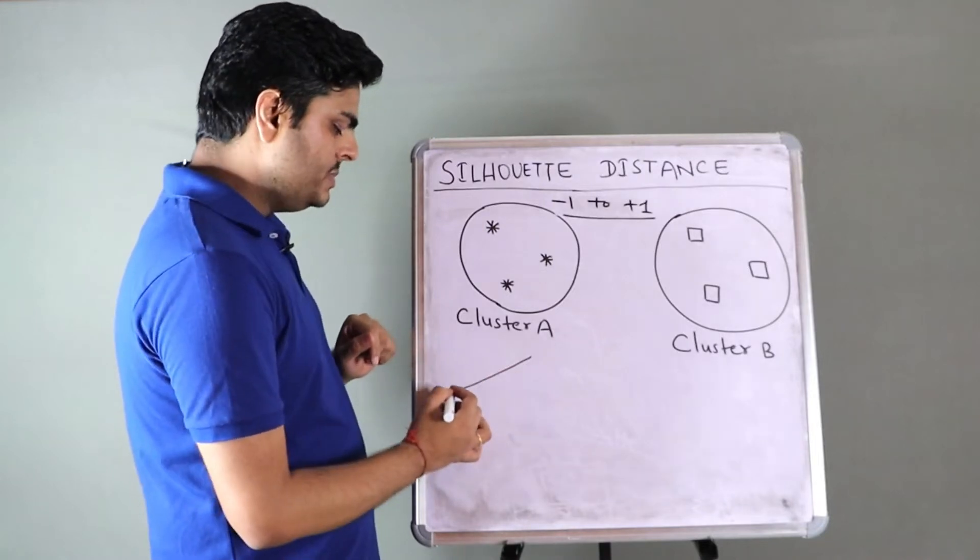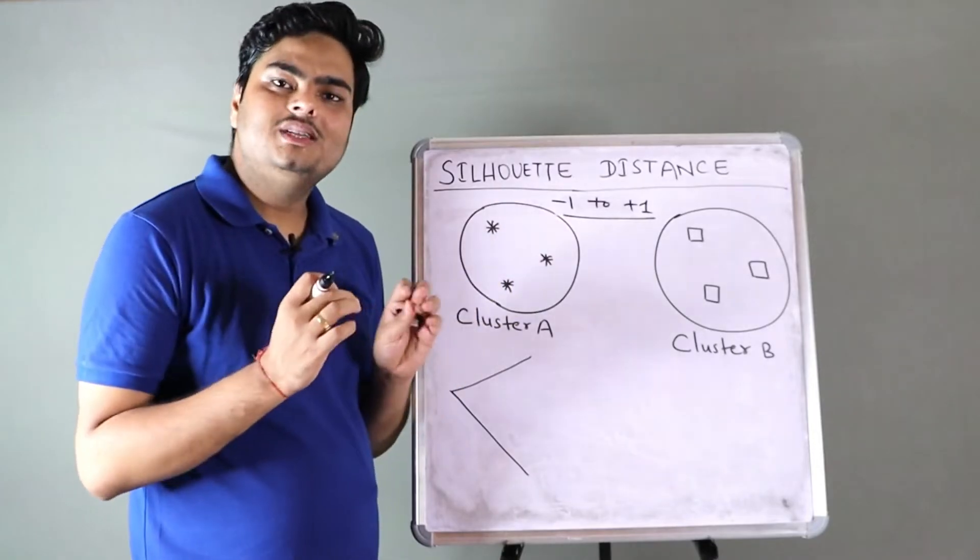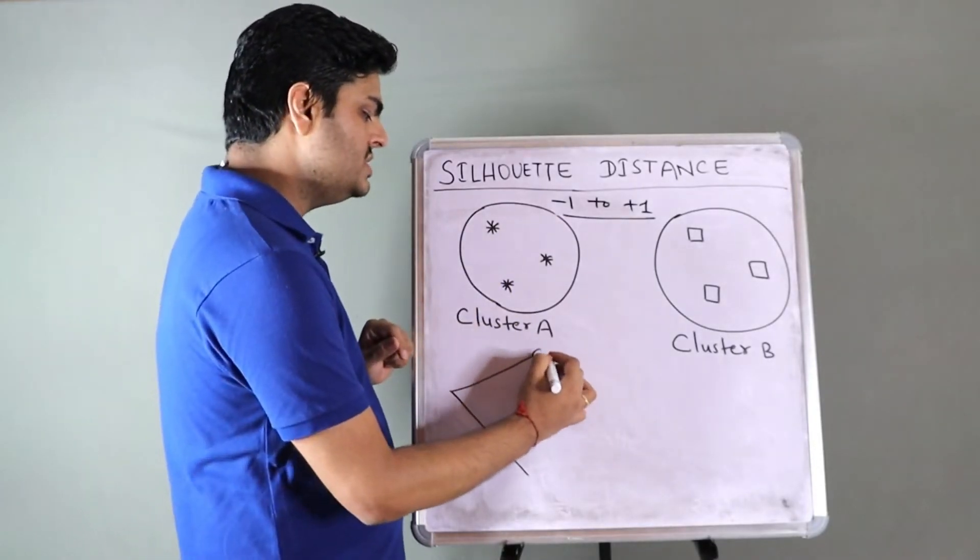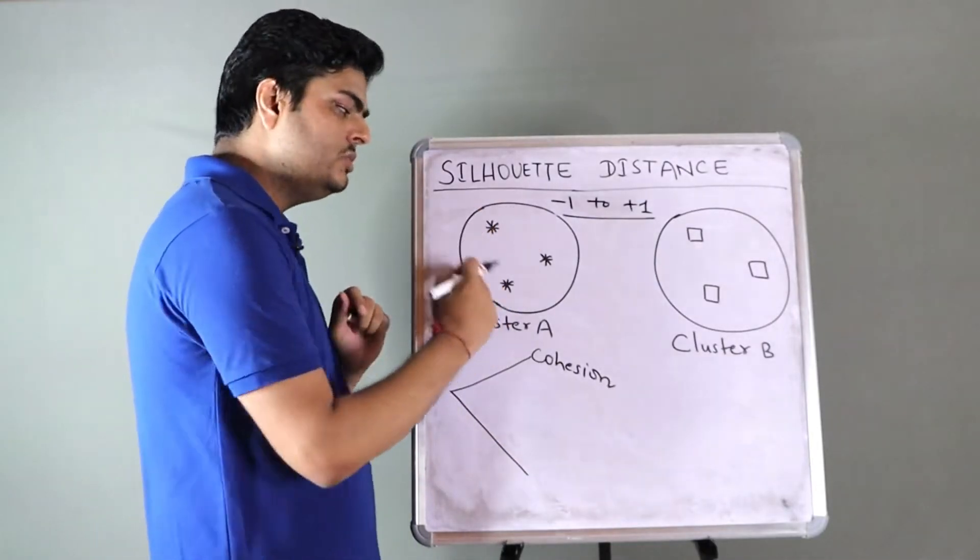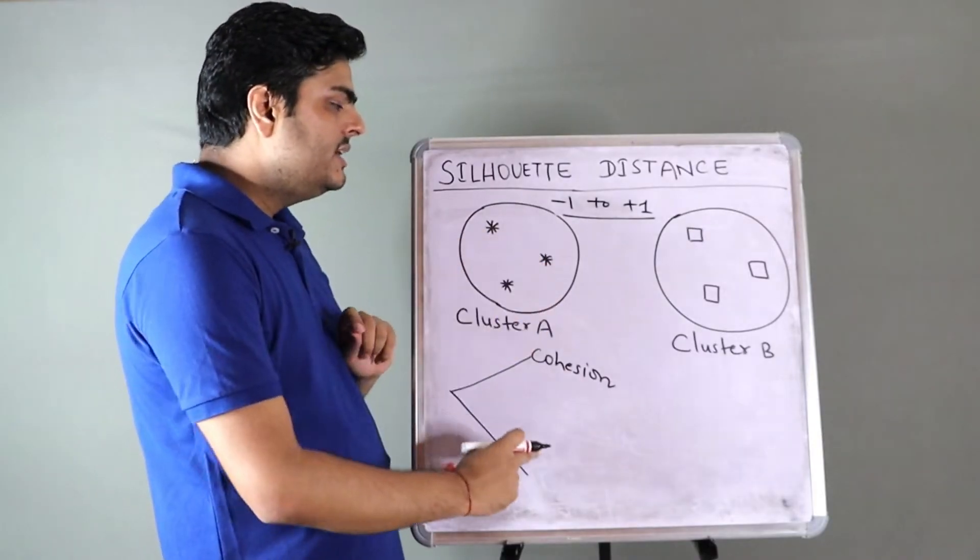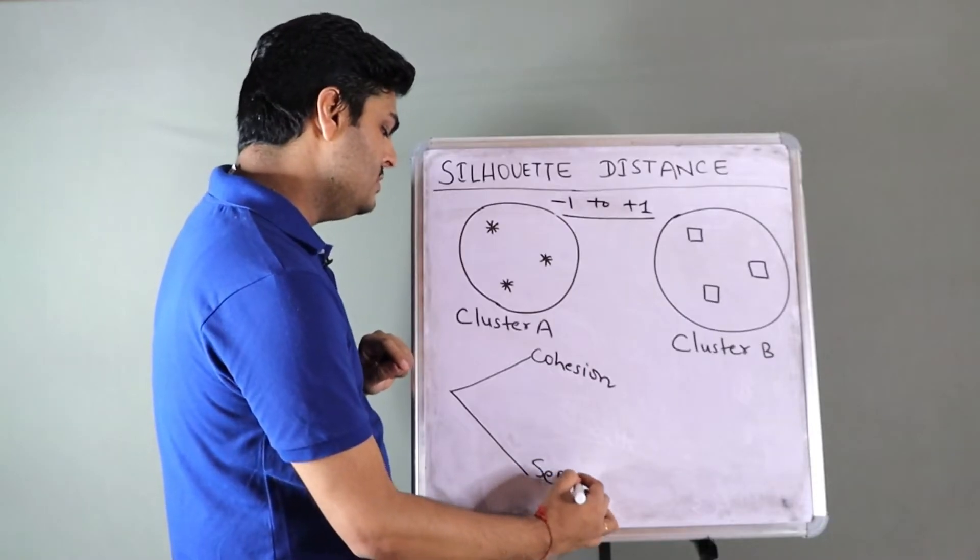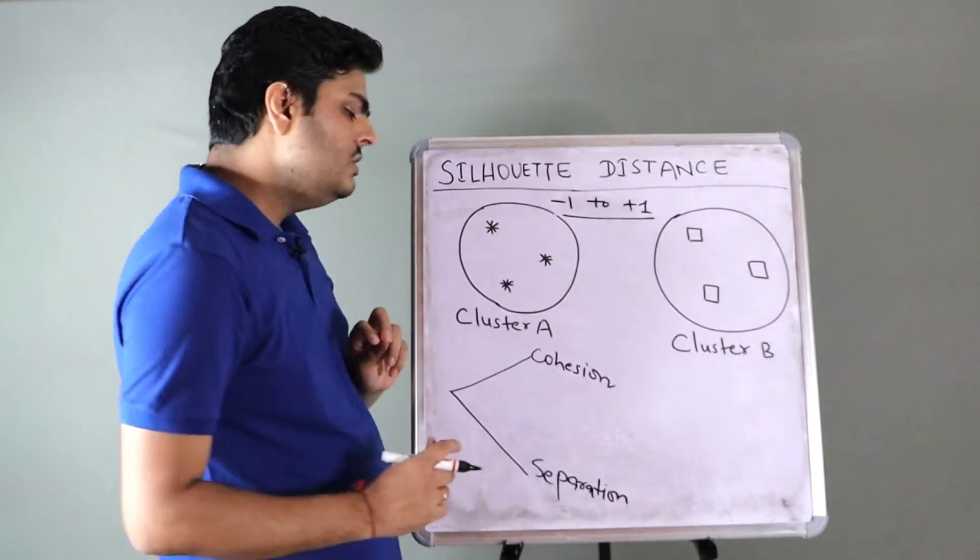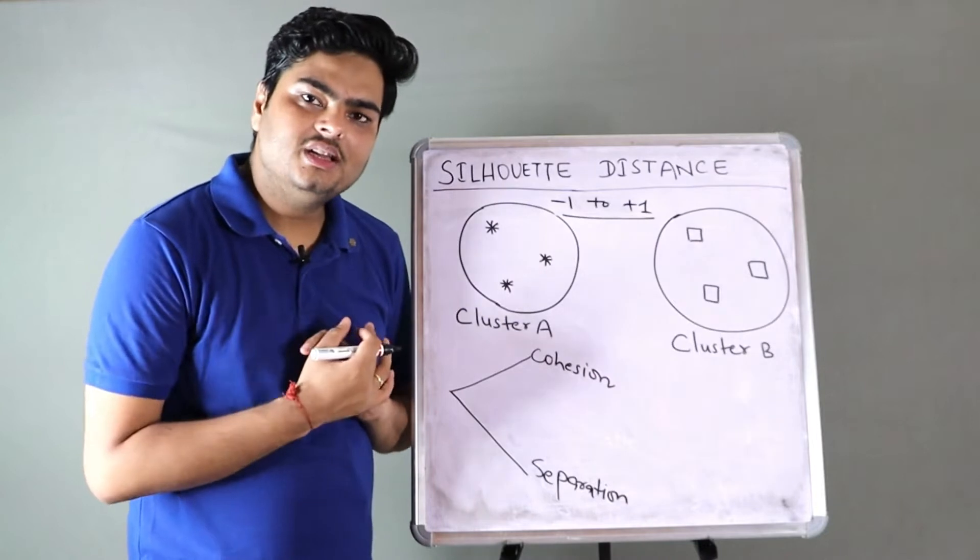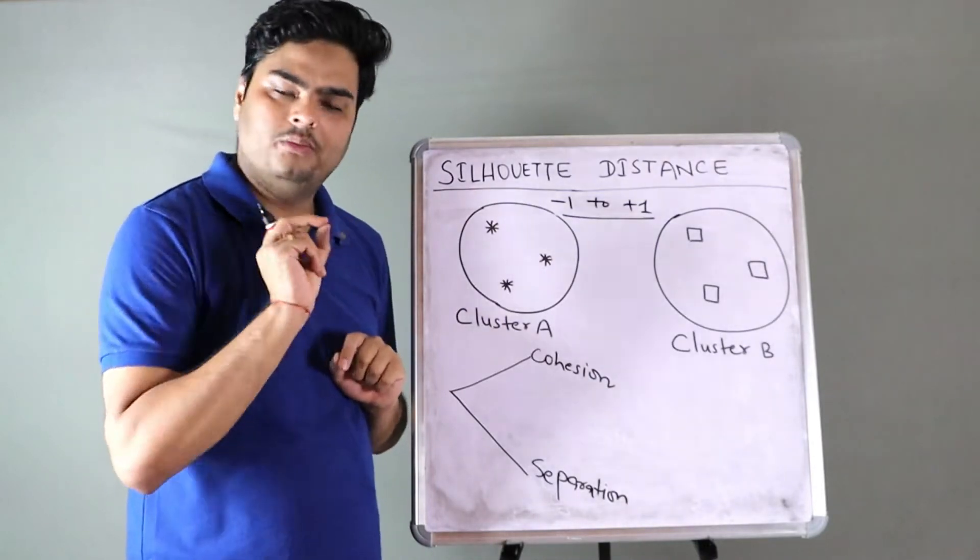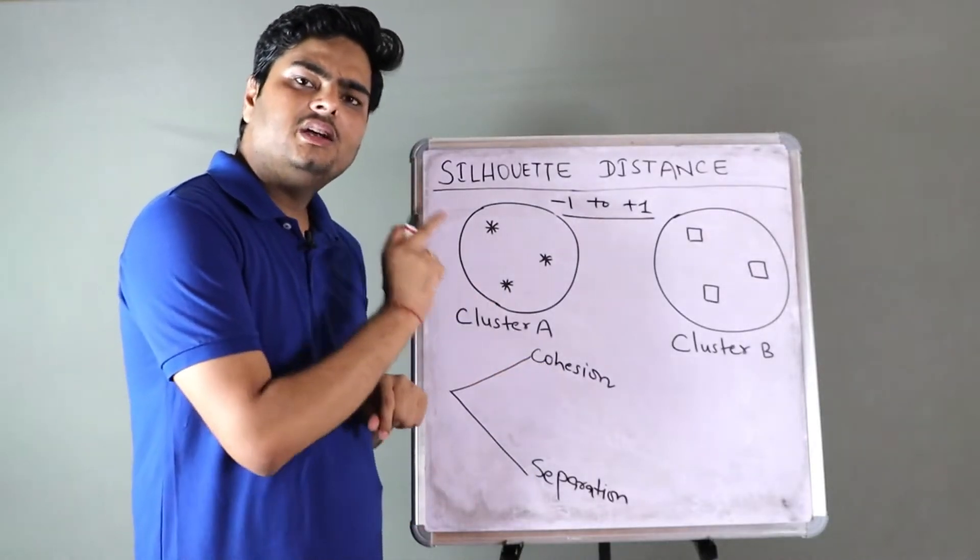So we will understand how this distance is computed in simple plain English with some basic examples. You will be very easily able to remember this always. So what are the two purposes? Purpose number one of clustering is these items should be the same to each other. This is known as cohesion.